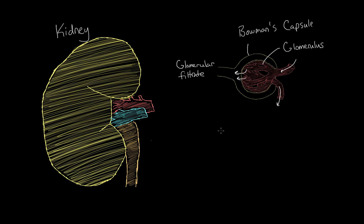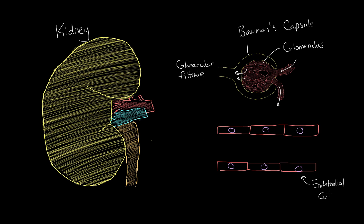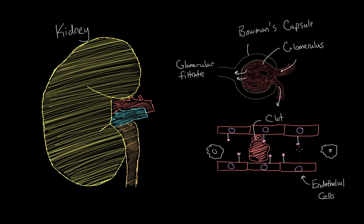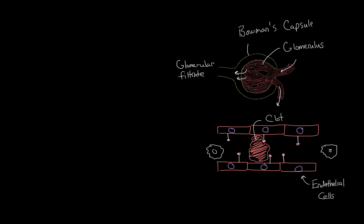The capillaries have cells lining them called endothelial cells, and these endothelial cells may have receptors for the Shiga toxin. The Shiga toxin can bind to these receptors, and when this happens, the immune system may notice that these cells are infected. Through a mechanism that's not fully understood, this leads to the formation of a clot that prevents blood flow through the area. This can result in total kidney failure, decreased urine output, or blood in the urine.